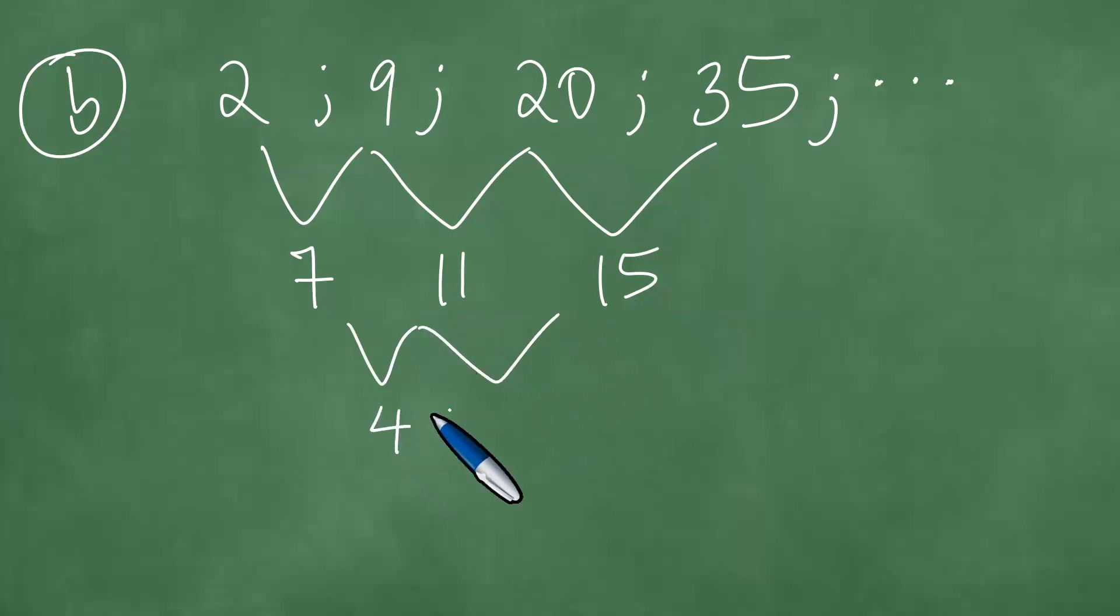11 minus 7 gives us a 4, and 15 minus 11 gives a 4. So 2a equals 4, 3a plus b equals this, and a plus b plus c equals 2.